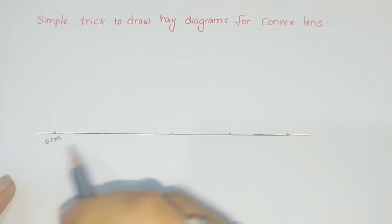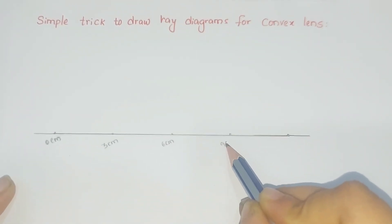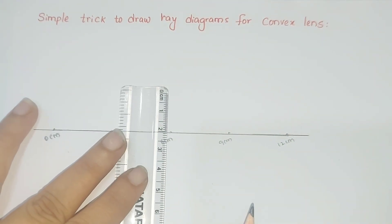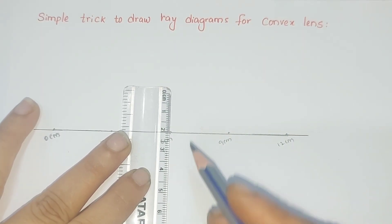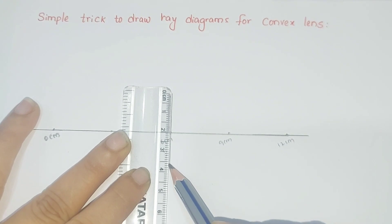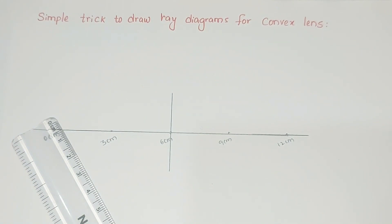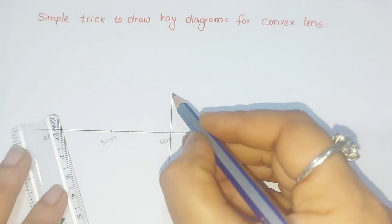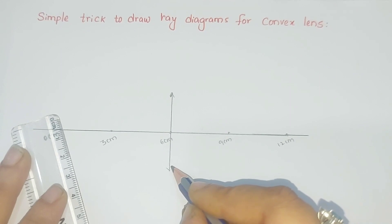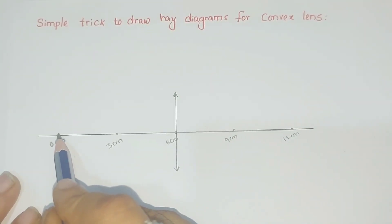These are the points at 0, 3, 6, 9, and 12 centimeters. At the point which is at 6 centimeters, we have to draw a normal. At this point, draw a line of 4 centimeters — 2 centimeters above and 2 centimeters below the horizontal line. Now I am drawing the ray diagram for the convex lens, so I put arrow marks like this. This represents the convex lens.